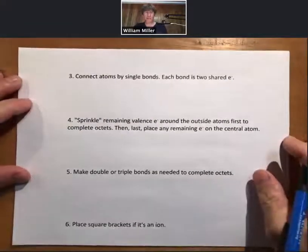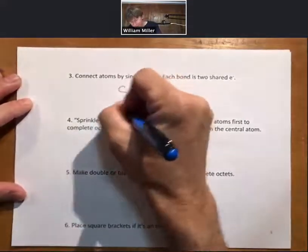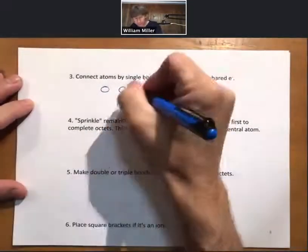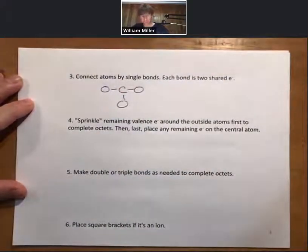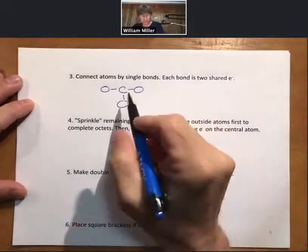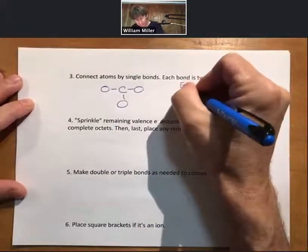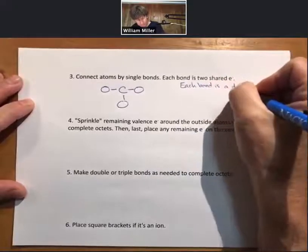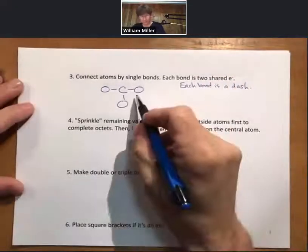Connect atoms by single bond. Each bond is two shared electrons. So I'll rewrite where I left off in step two. Now step three is going to be to have single bonds. Each bond is two shared electrons. Each bond is a dash.